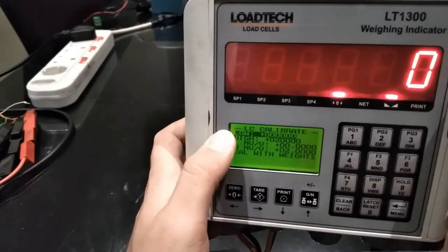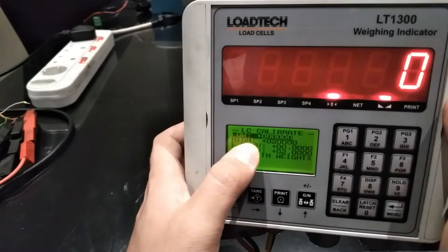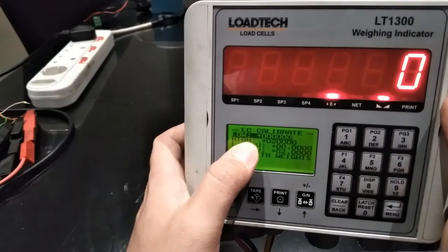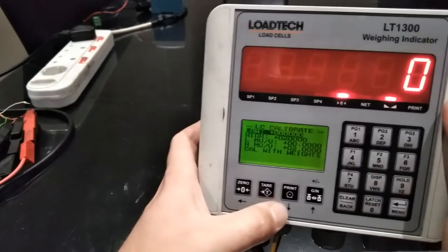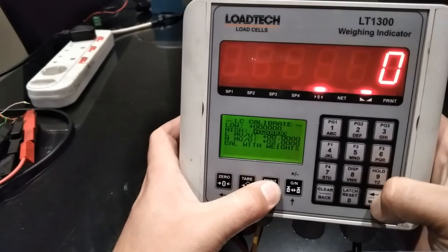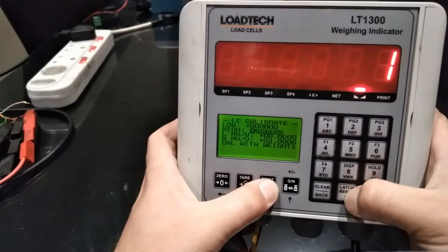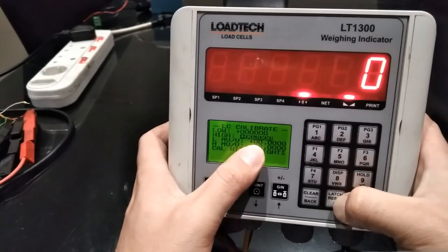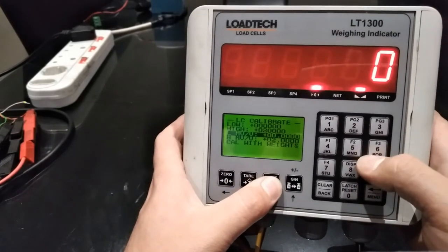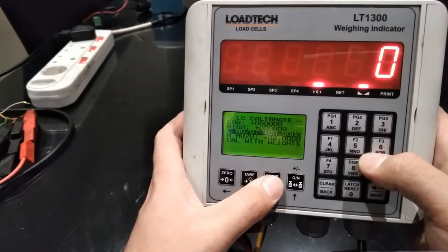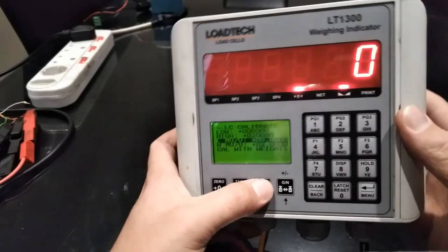Once here you will see low and high. Low is your zero point of your load cell, which is normally zero, and high is the full capacity of your load cell. For instance, if you have a 20 ton load cell this would be 20,000, so you can input 20,000. As stated in my previous videos, there are two ways to calibrate these indicators.